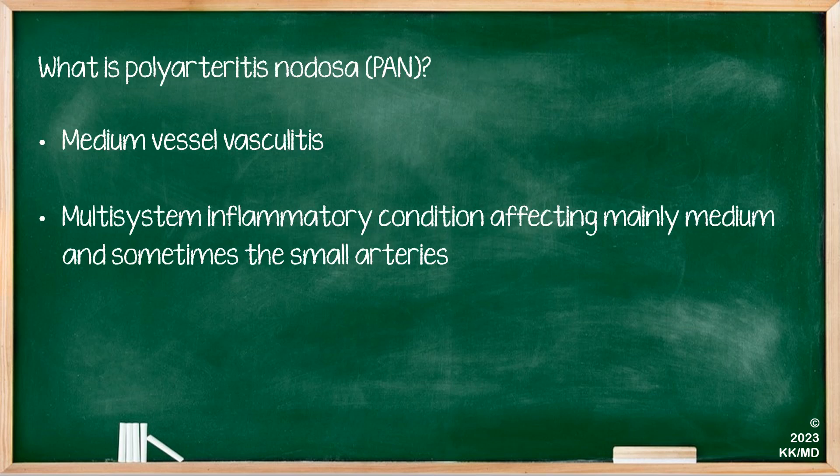So what is polyarteritis nodosa? It's a type of medium vessel vasculitis. If you would like to refresh your memory and knowledge on different types of vasculitis and would like an overview of those, we have covered them in one of our lectures that you can find in our Rheumatology section on YouTube. As for PAN, it is a multisystemic inflammatory condition affecting mainly medium and sometimes small arteries.